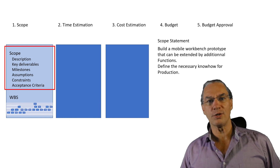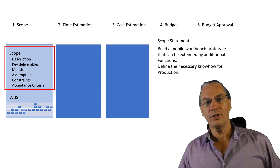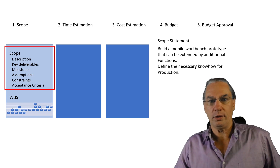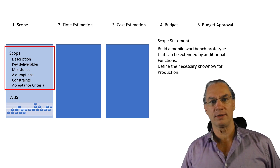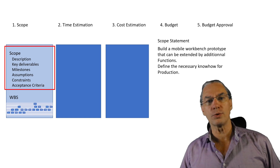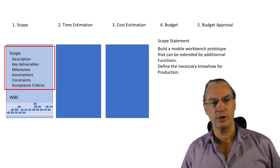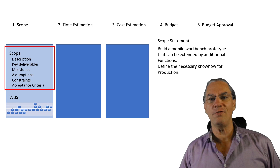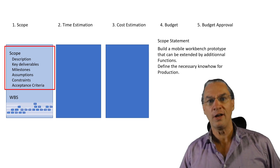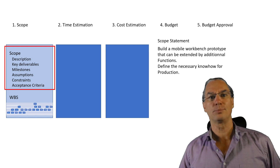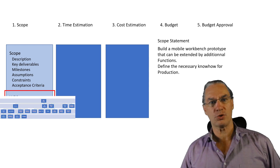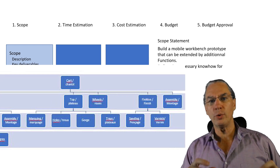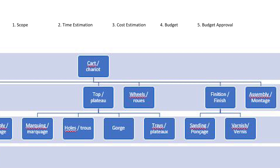Within the scope, you will also find a description and the key deliverables. In our case, the mobile workbench and the different milestones we expect in the project. Of course, there are assumptions and constraints. One important point is that it also defines the acceptance criteria for the deliverables. With that, we do what is called the work breakdown structure, which graphically represents all the smallest deliverables we have to provide in the project.